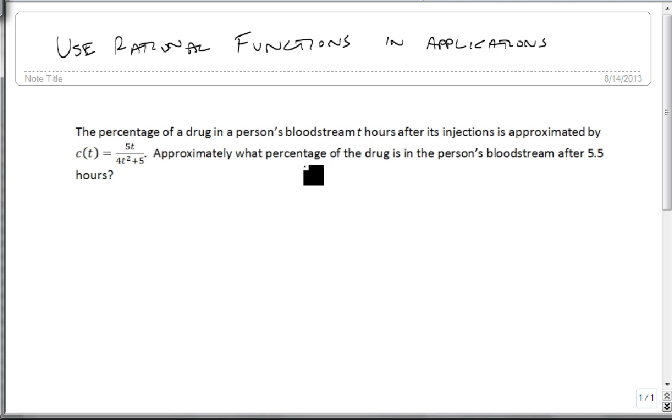Approximately what percentage of the drug is in the person's bloodstream after 5.5 hours? So here's what we know. We know that c of t is 5t divided by 4 times t squared plus 5. We also know that it's been 5.5 hours, so t is 5.5.